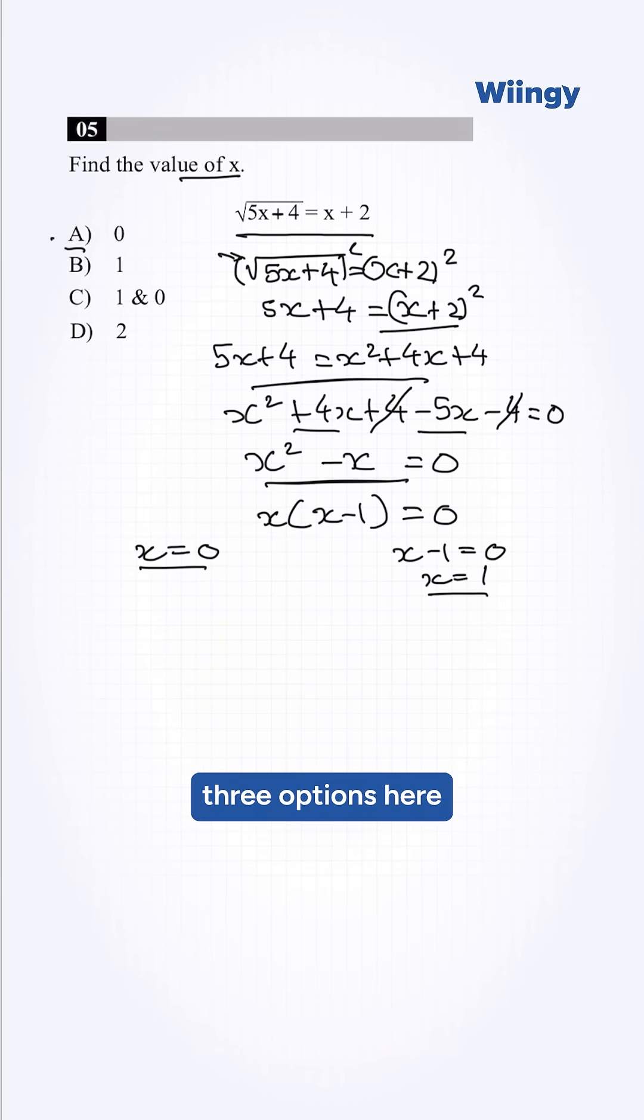But there are three options here with 1 and 0, so we need to substitute this into our equation to verify our answer. It will become root of 5 into 0 plus 4 is equal to 0 plus 2. This will become root 4 is equal to 2. Root 4 is basically 2 is equal to 2, and LHS is equal to RHS. So x is equal to 0 is our answer.